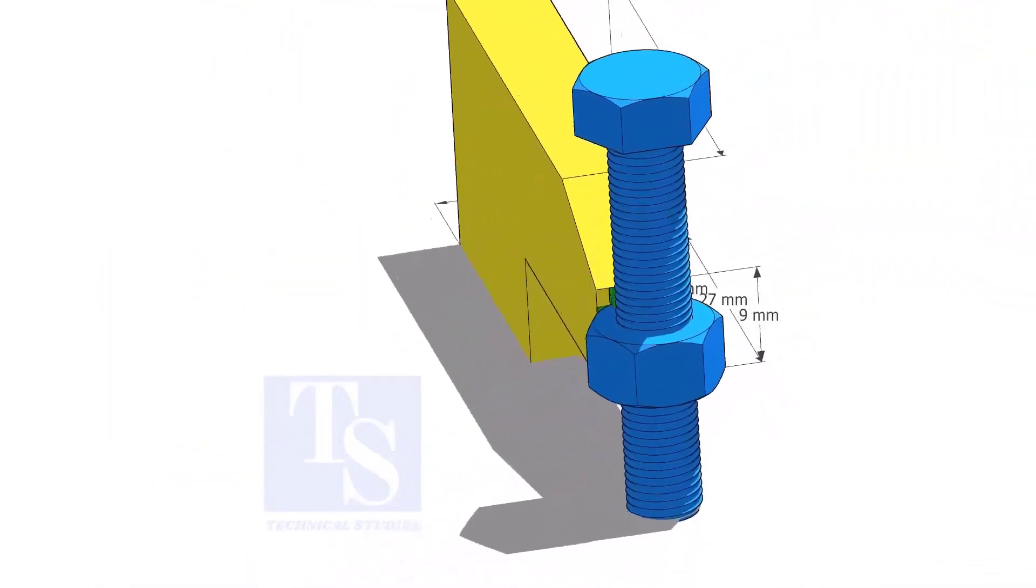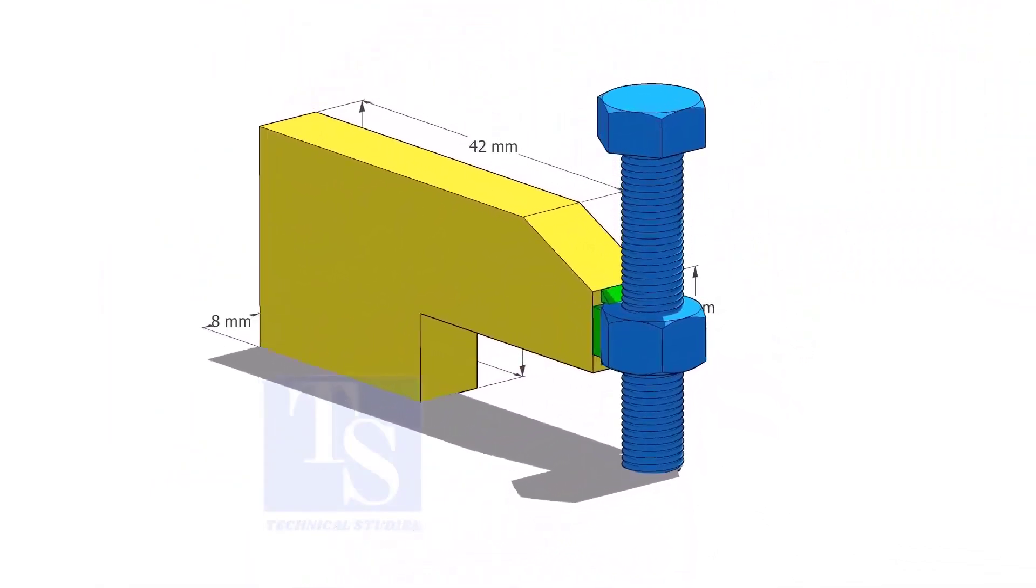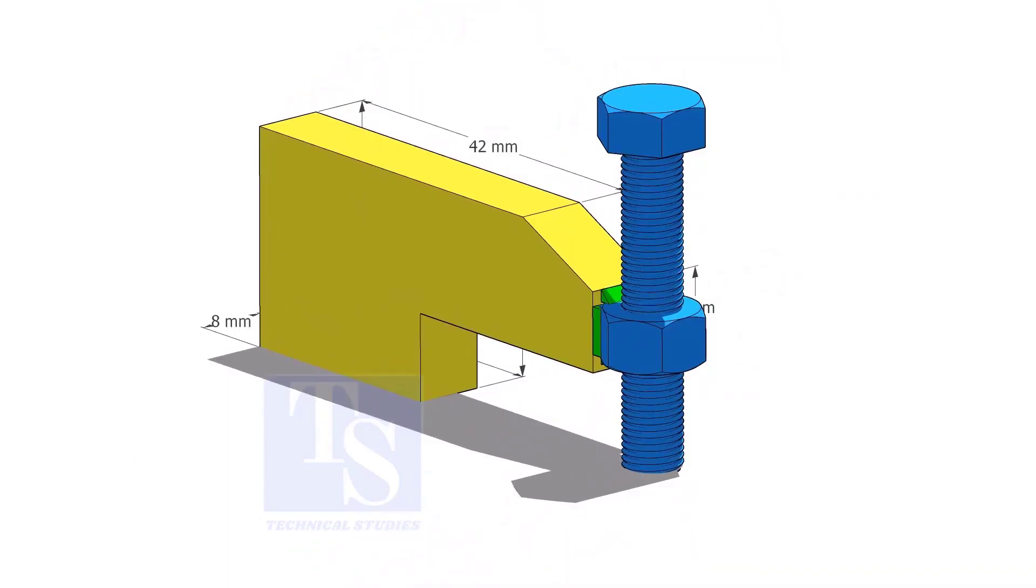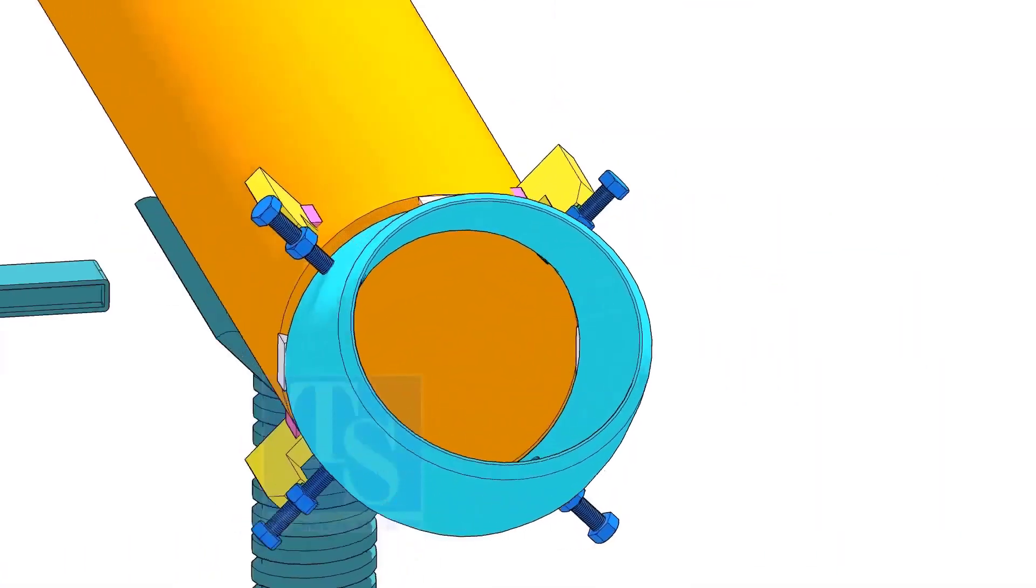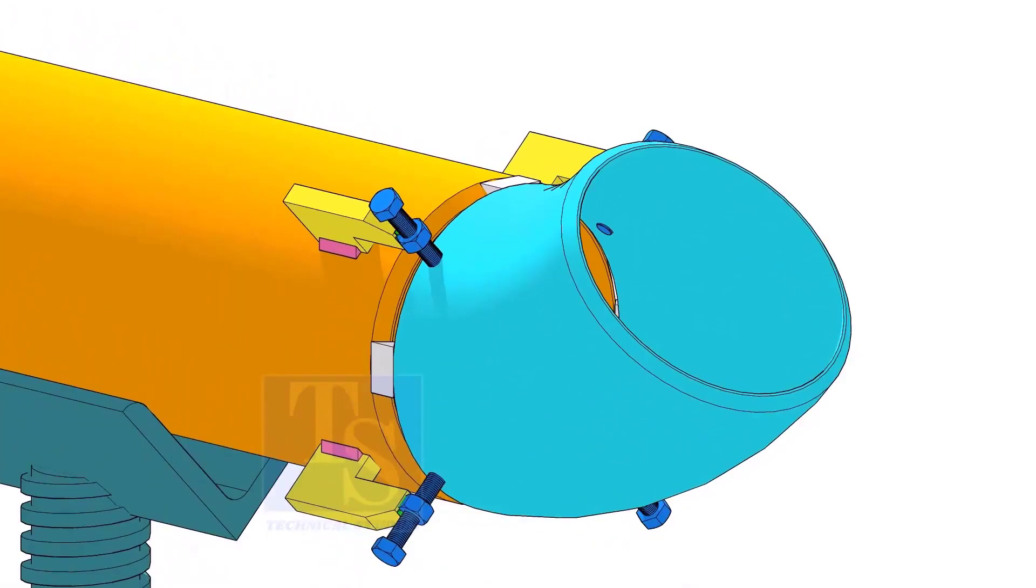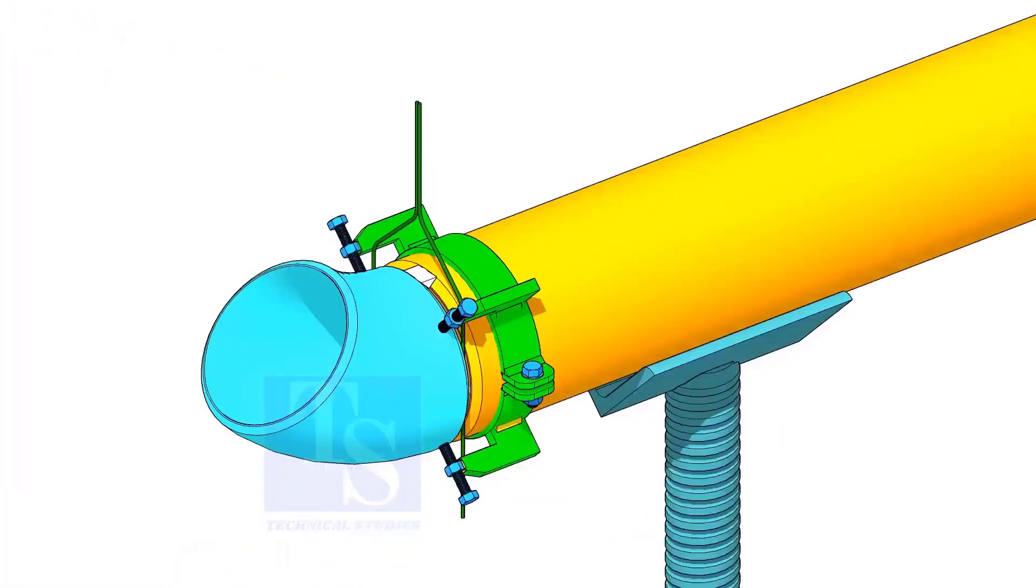Tack weld the nut to the L clamp as shown. You can either tack weld the jack bolt directly on the pipe or you can make a simple clamp like this.